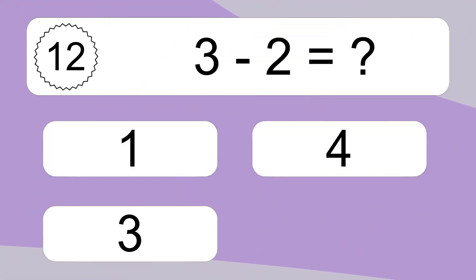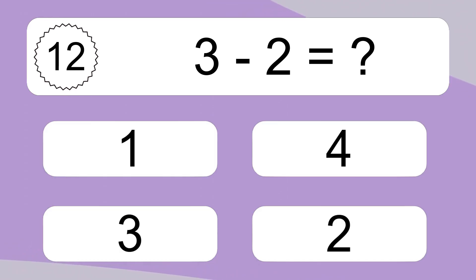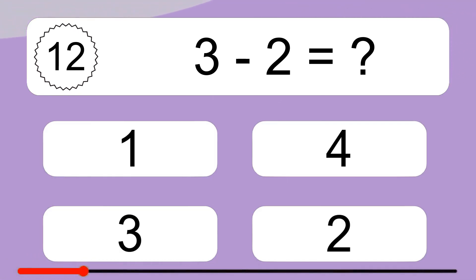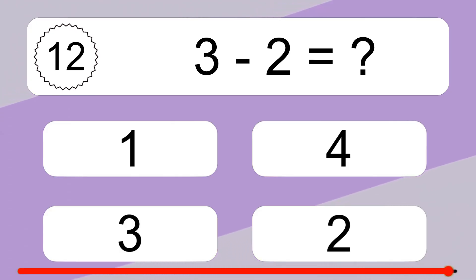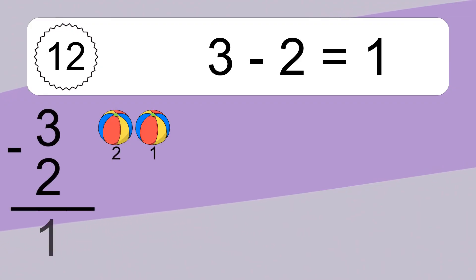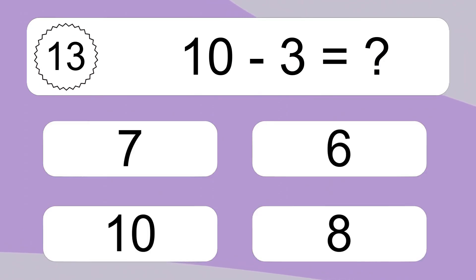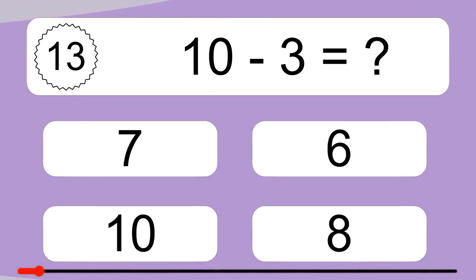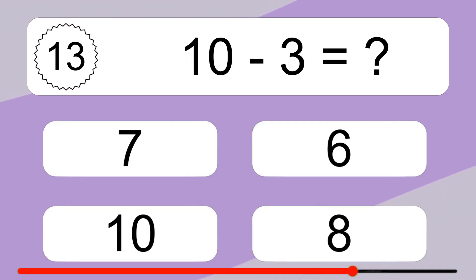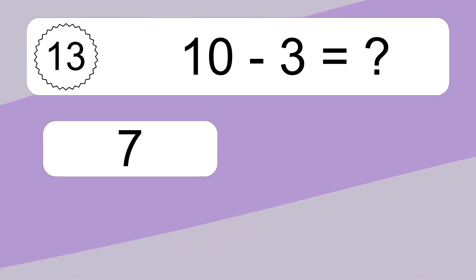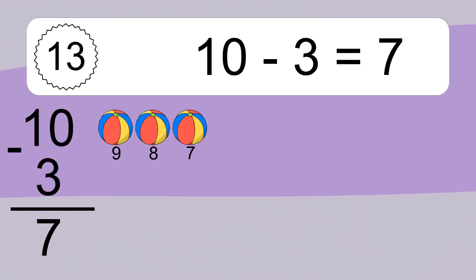3 minus 2 equals what? 3 minus 2 equals 1. Let's count it. 2, 1. 10 minus 3 equals what? 10 minus 3 equals 7. Let's count it. 9, 8, 7.